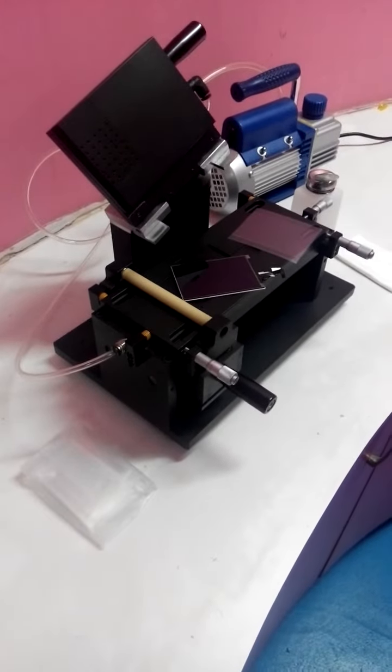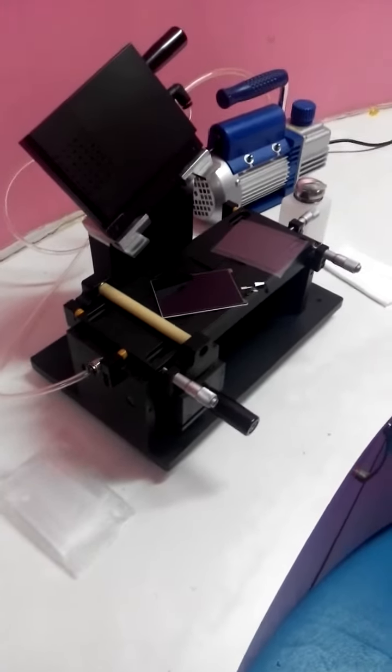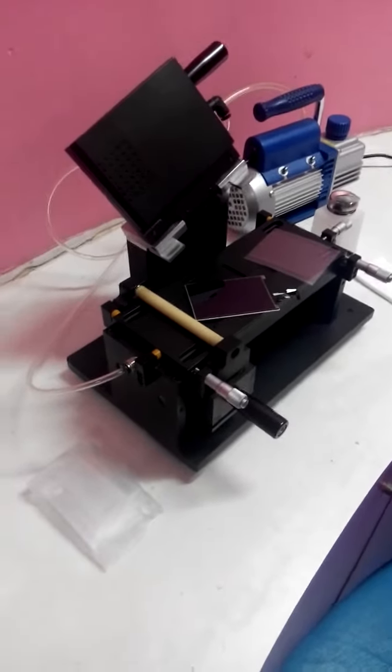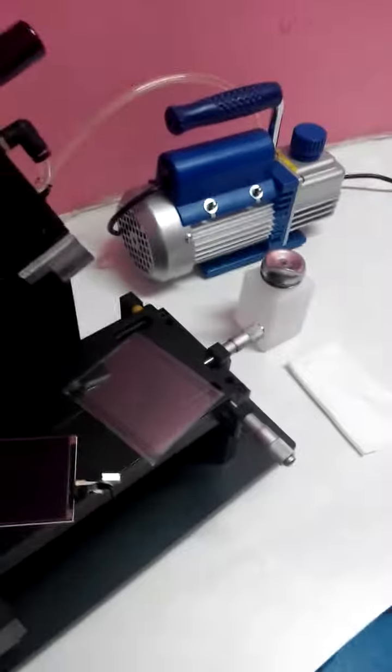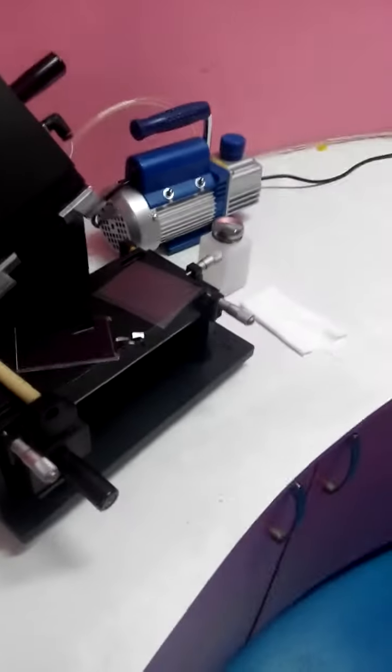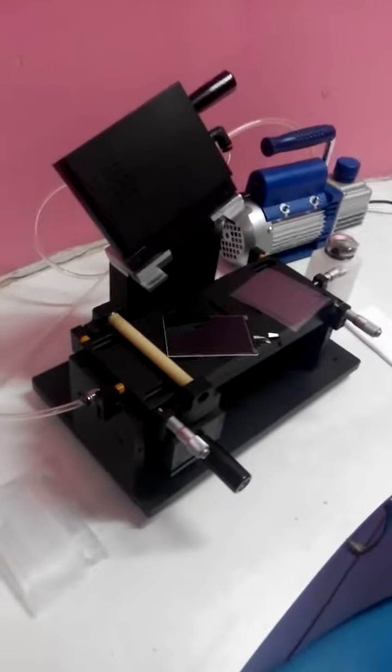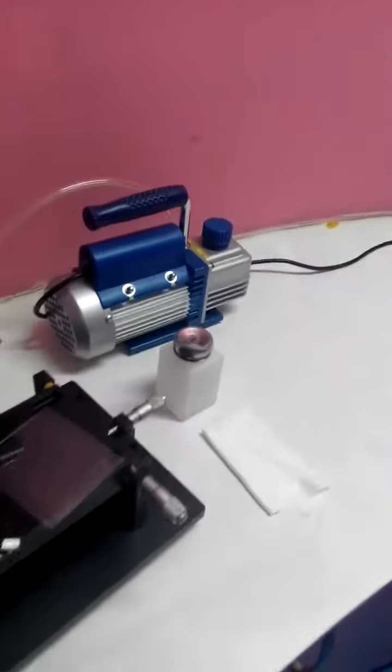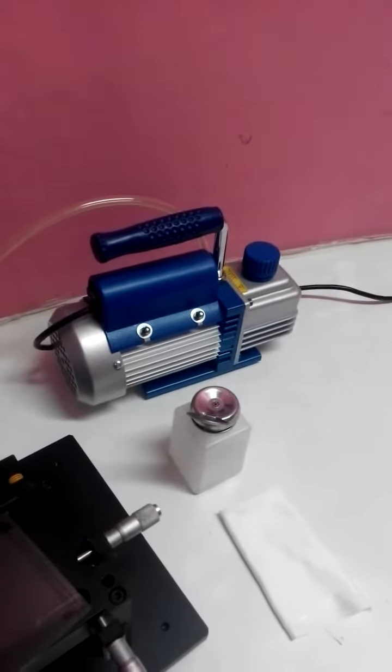Now we go on with procedure 3. This is the OCA film laminator. You can see there is a mold on the machine and we need to connect the vacuum pump. The pump has a canister which is one liter.